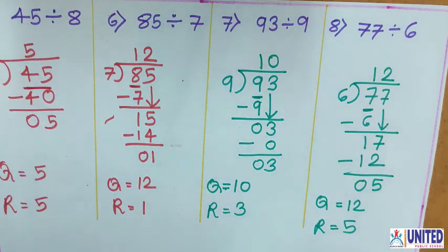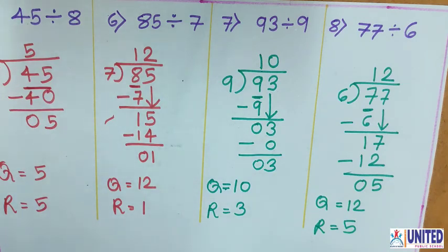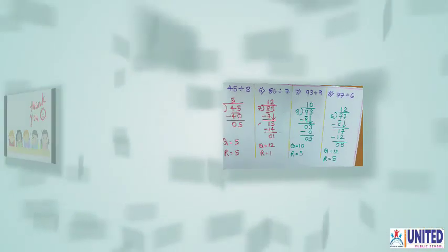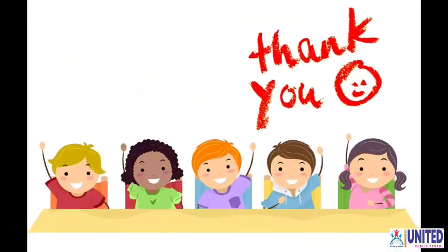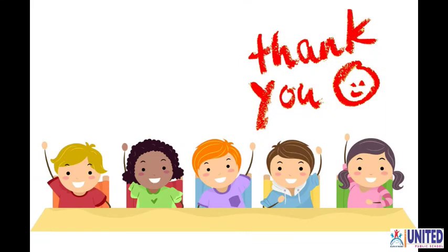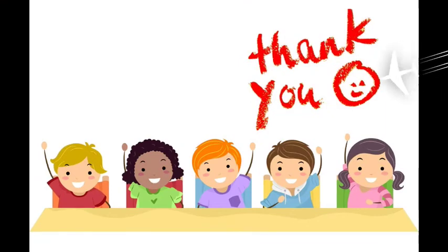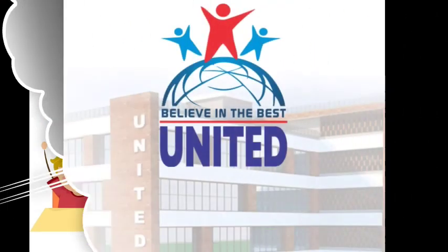So in the next time, we will see what happens if the dividend is 3 digits and divisor is 1 digit — we will see that in the next video. That's all for today. Thank you.